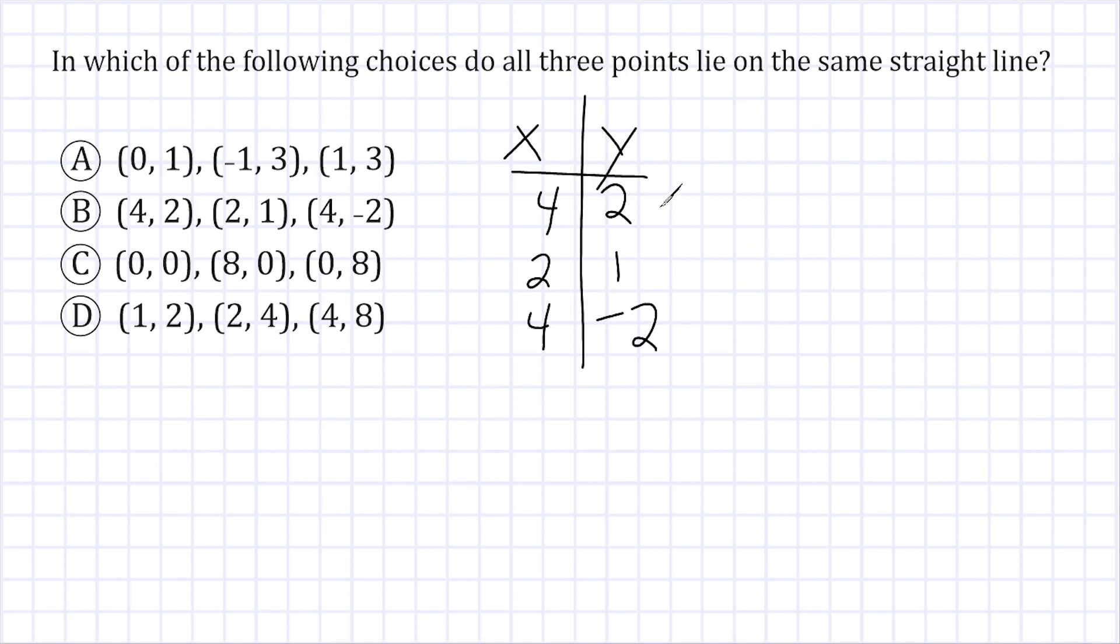Alright, so let's start with the change in y's. So from 2 to 1, that decreases by 1. The corresponding x values decrease by 2. And then for the next pair of points, we go from positive 1 to negative 2, which is a decrease of 3. And from 2 to 4, that is an increase of 2.